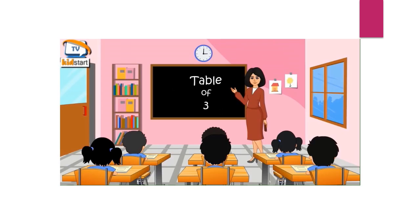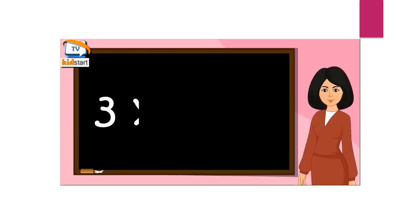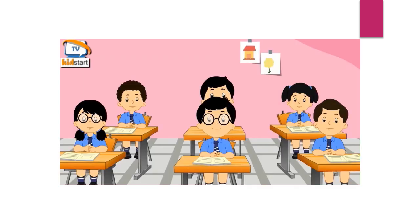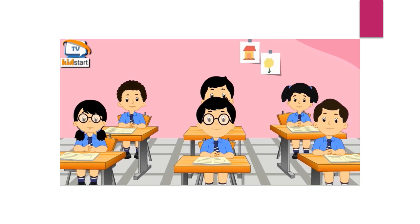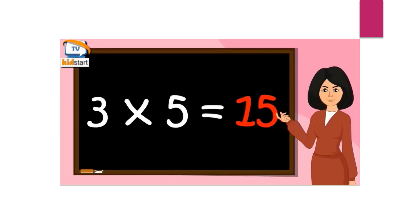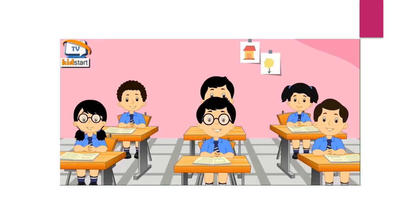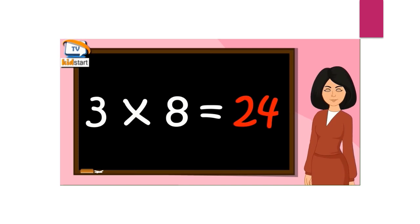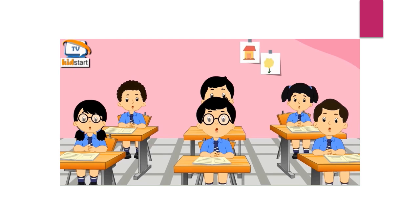Table of three. Three ones are three. Three twos are six. Three threes are nine. Three fours are twelve. Three fives are fifteen. Three sixes are eighteen. Three sevens are twenty-one. Three eights are twenty-four. Three nines are twenty-seven. Three tens are thirty.